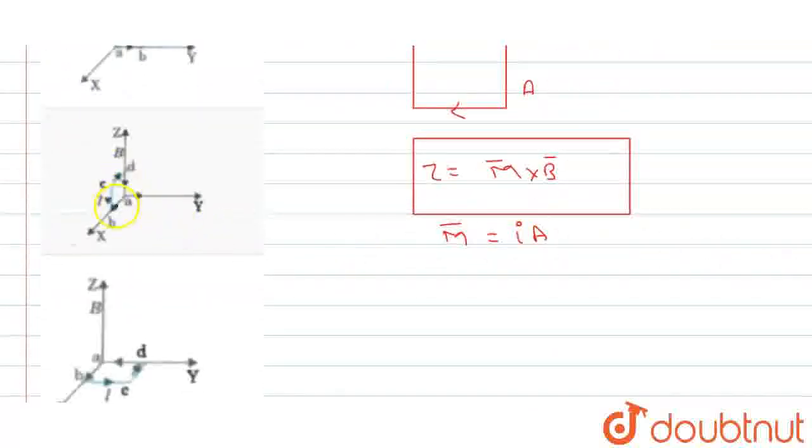Dusre wale mein, current ka direction idhar hai, idhar se idhar. Aapne right hand ke fingers ko curl karo, magnetic moment direction minus Y axis ke along aega. Magnetic field kidhar hai upar. M cross B karo, yeh M ka direction, torque ka direction minus X axis ke along aega. Yahan pe bhi torque aa raha hai, yeh option bhi galat.